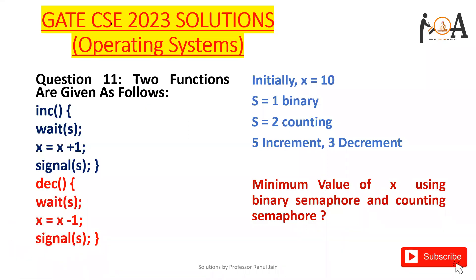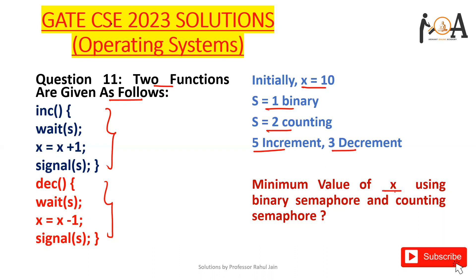One of the questions asked from operating systems in GATE CSE 2023 was a memory-based question. An increment function and a decrement function were given, and initially the value of x equals 10 was given. Both binary semaphore and counting semaphore values are given, where we need to perform 5 increment operations and 3 decrement operations. The minimum value of x must be found for both semaphore types.